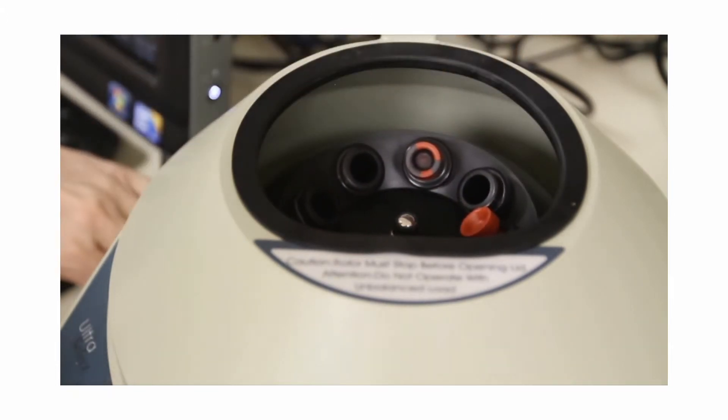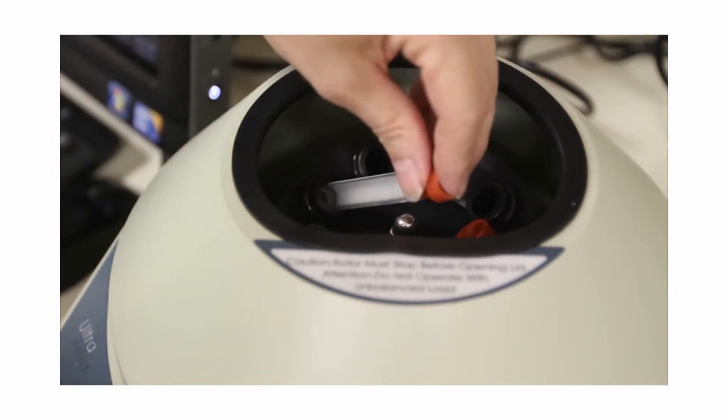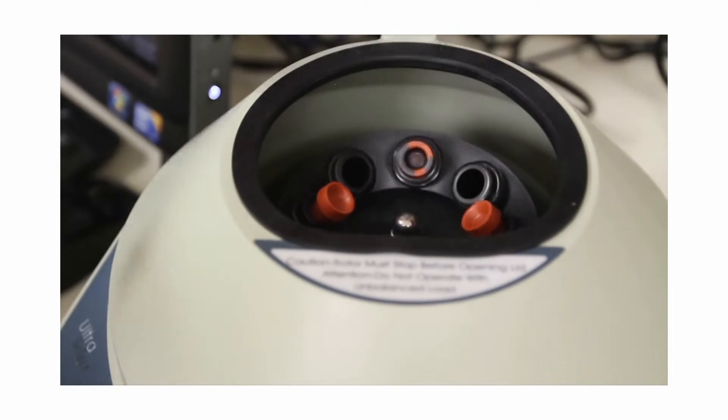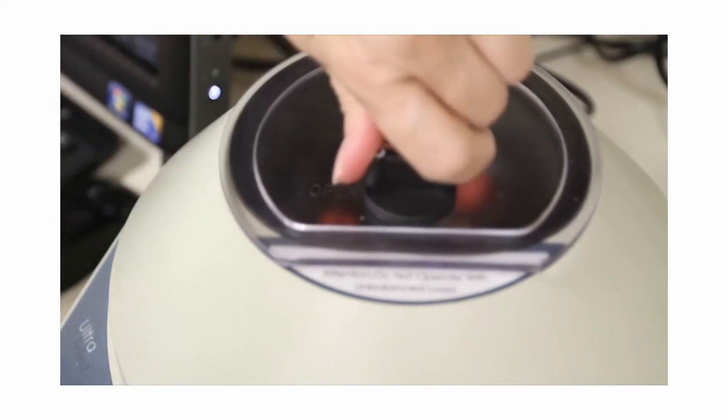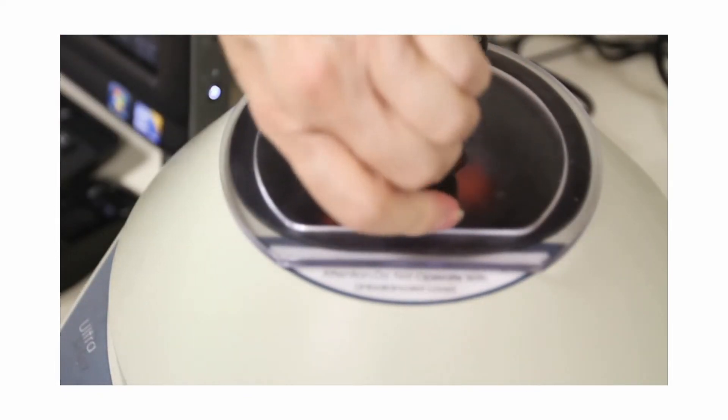Always be sure to balance the sample with a similar quantity of water or blood on the opposite side of the centrifuge. This is necessary to keep the instrument spinning smoothly and in balance while spinning.